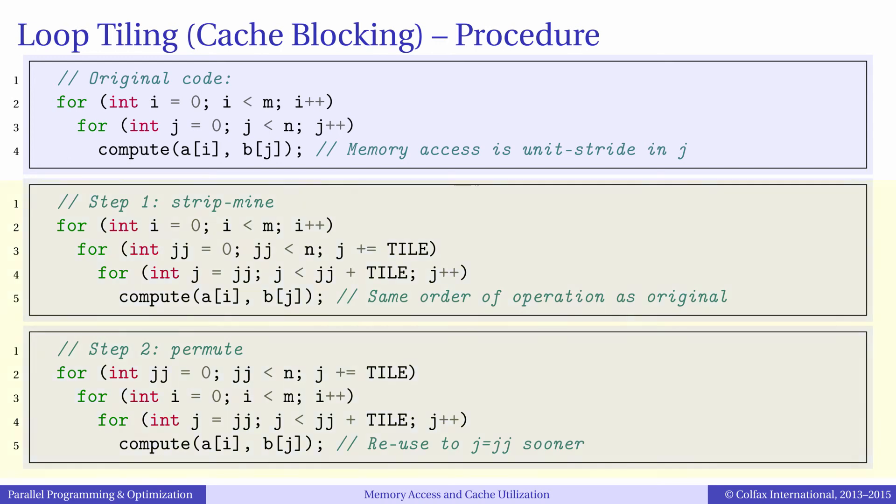The procedure for tiling a loop involves two steps: strip mining and permutation. If we have two nested loops, like in the top panel, we can strip mine the inner loop in j as shown in the middle panel. After that, we permute the outer two loops as shown in the bottom panel. The last code is a tiled implementation of the first code, and it may be more efficient in its memory access pattern because it reuses elements indexed by j sooner than the original code.